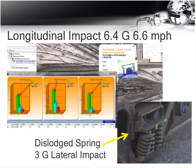A longitudinal impact of 6.4G at 6.6 miles per hour — another shock pulse-type event. The 100 Hz reading was 6.4G and the 10 Hz reading was 2.5G, confirming the event happened in a very short period of time. A lot of energy was focused on the coupler. As a result, when the car returned to the yard, it had a dislodged spring due to a 3G lateral impact.